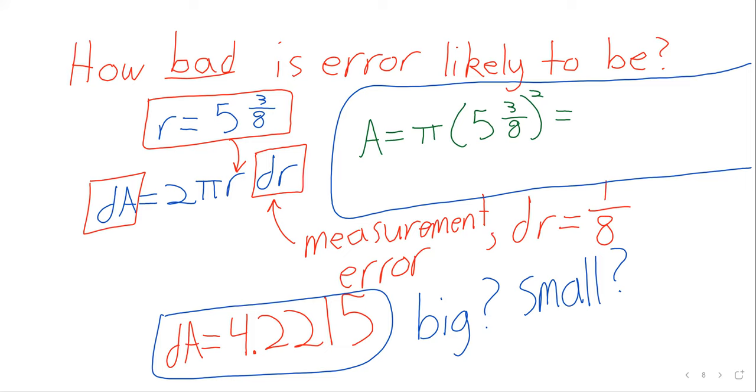So just plugging this into the calculator, pi times 5 plus 3 eighths squared, 90.7626. So compared to 90.7626, 4.2215 doesn't appear to be an enormous amount of error.